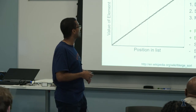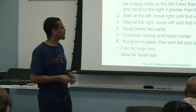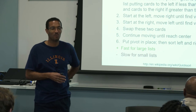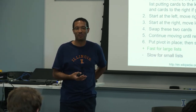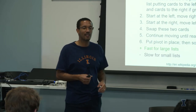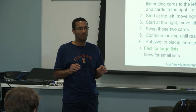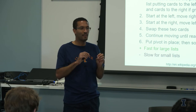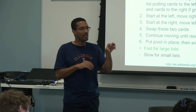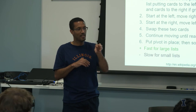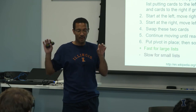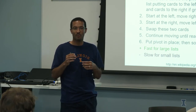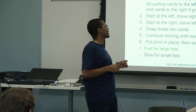Now let's talk about quicksort. Quicksort is arguably — and most people won't argue — the fastest sorting algorithm for computers. The reason it's fast is that it utilizes features of how the computer stores information in memory. It uses locality of reference: if you're looking at a value in memory and want the value right next to it, that operation is relatively quick.